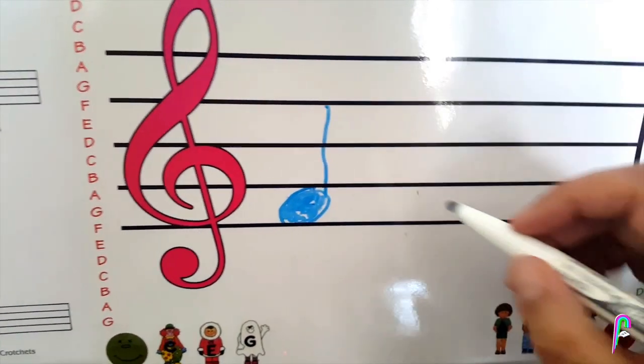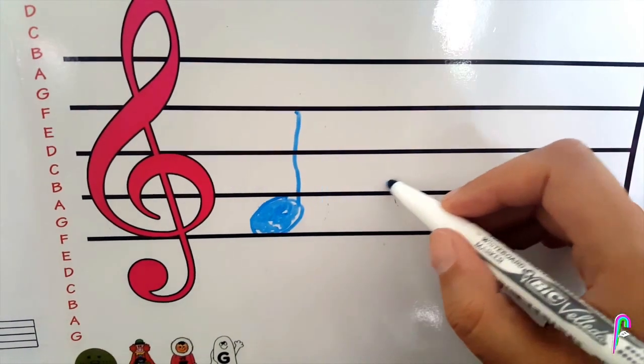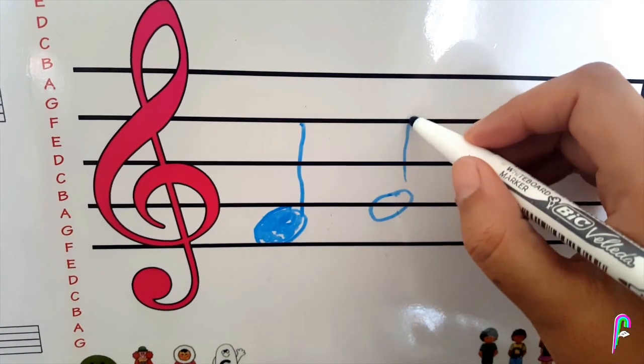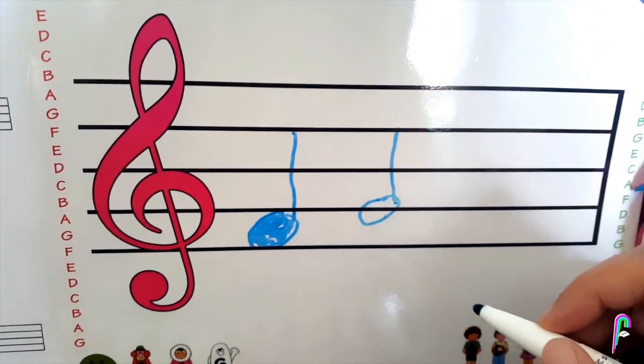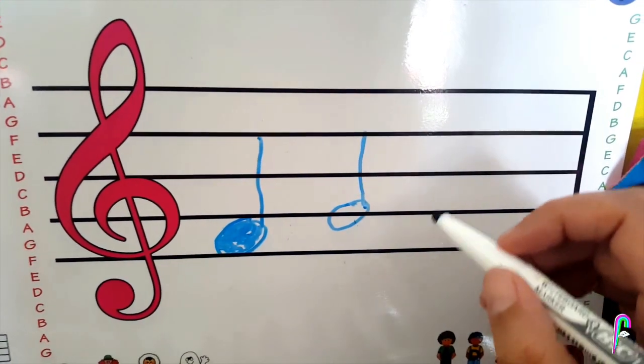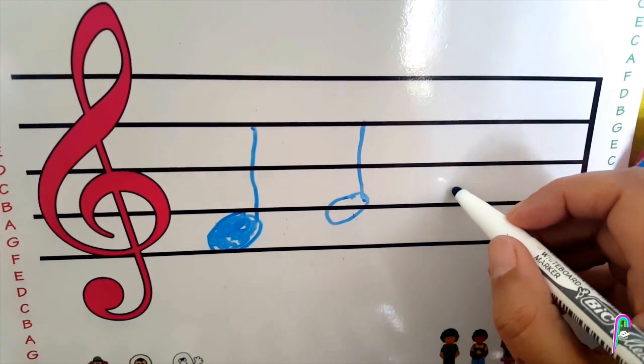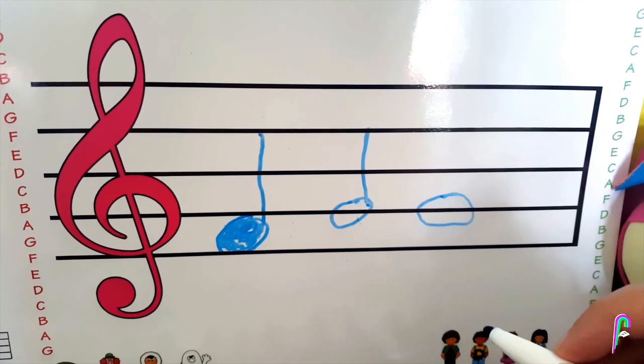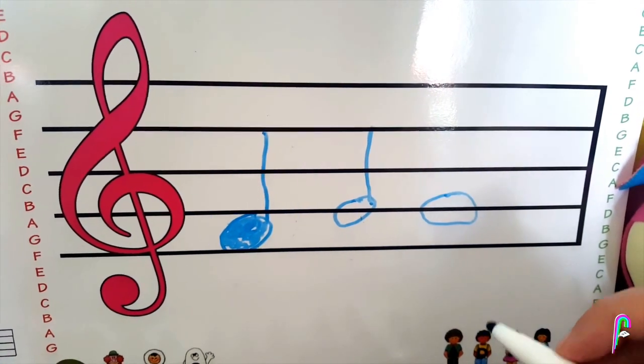Remember a crotchet is filled in whereas the minim isn't. You can make that a bit neater I'm sure. And the G starts on the line. I'll do that one as a minim. Now if you wanted to do a G semibreve you could do it like this. There we go.